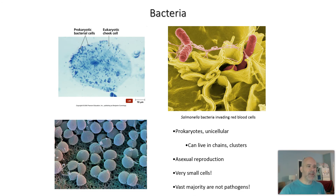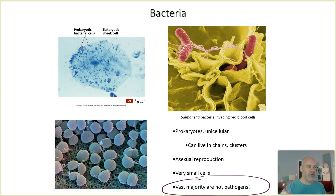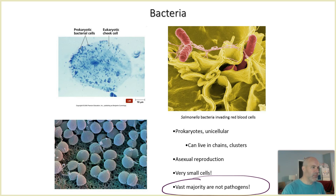Some other key characteristics of bacteria: asexual reproduction — that means you don't have males and females; they don't mate to reproduce. One cell divides into two. They're very small cells. Another thing I want to hammer home: the vast majority are not pathogens. The vast majority do not cause disease. A pathogen is a microorganism that can make us sick. We get exposed to bacteria all day long — everything's coated with them. You're breathing them in, drinking them, eating them, and the vast majority do not make you sick. Your immune system wipes them out from the minute they enter your body. However, we tend to focus in on the minority of bacteria that are capable of making us sick.